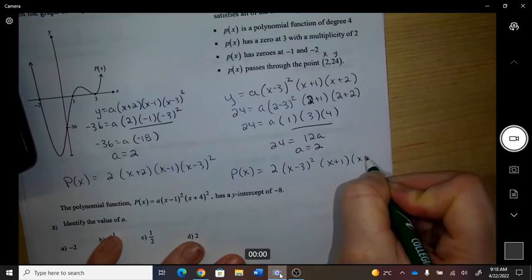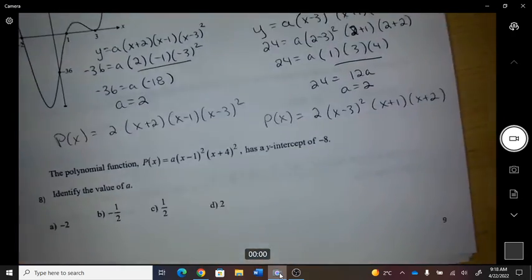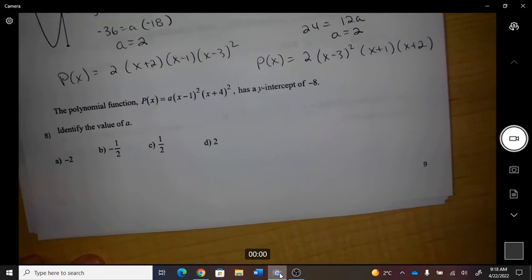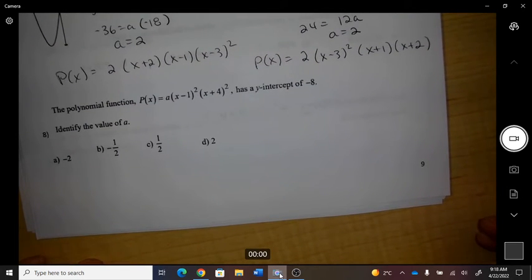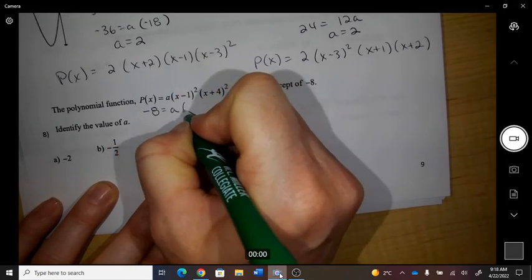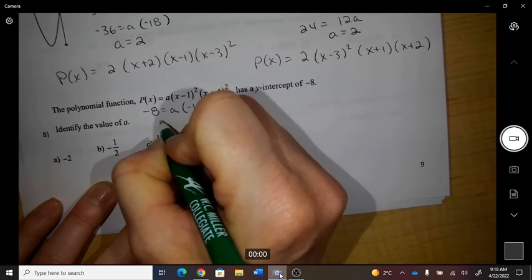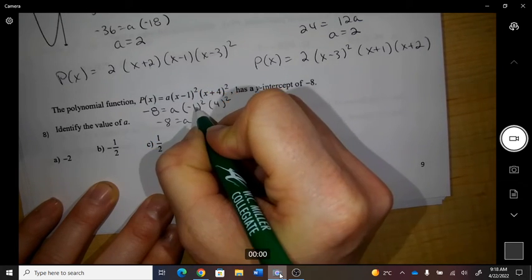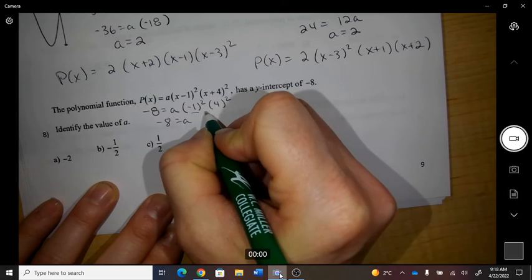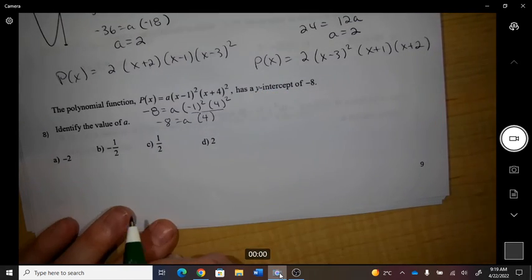The polynomial has a y-intercept of negative 8. Identify the value of a. So negative 8 equals a, if x was 0. If x was 0, so this is positive 1 times 4.